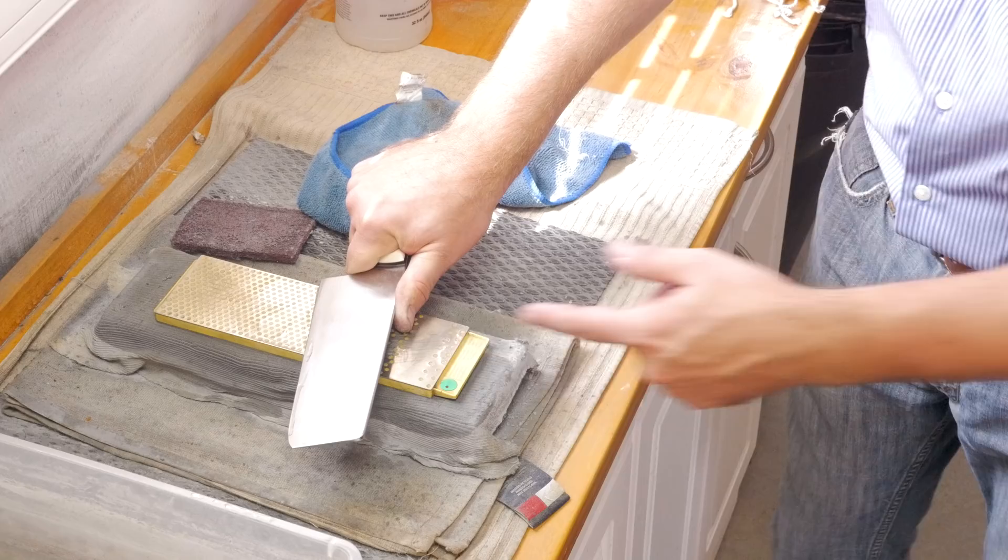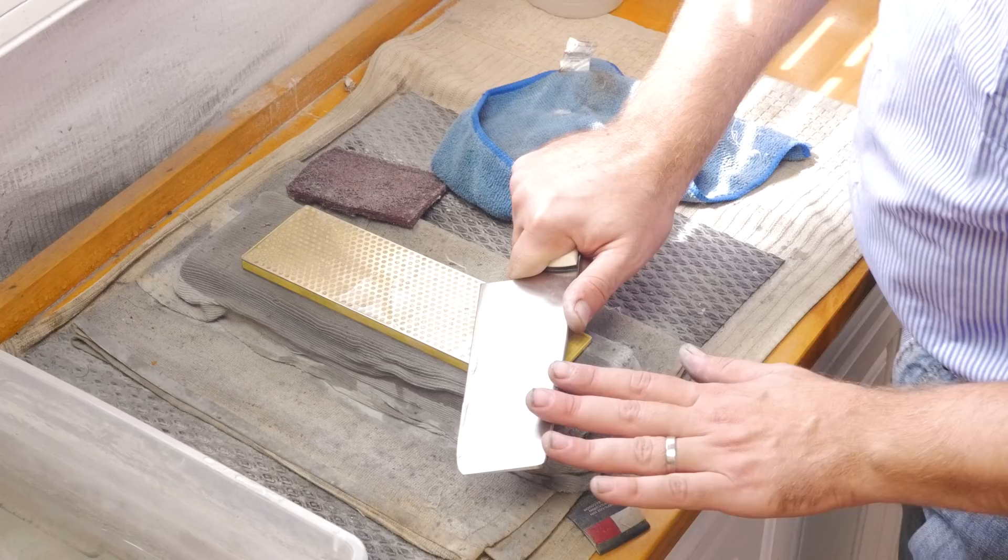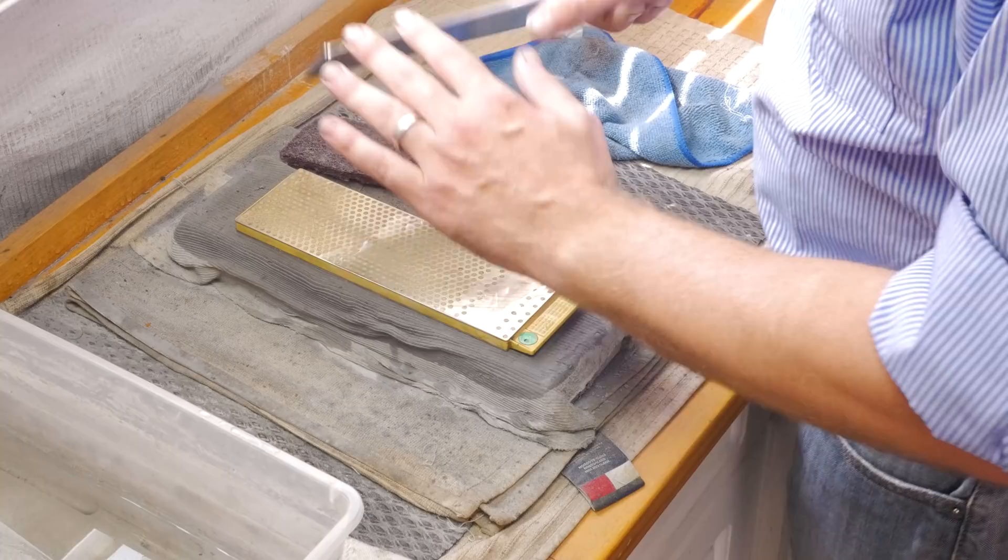So I do push on diamond because I actually think that diamond cuts better in a push cut and this isn't my final finish. The angle at which I sharpen, it's about my thumb, about three quarters of my thumb height. That gives us 15 to 16 degrees roughly. But really, it's just what feels comfortable and you adjust it based on how you use the knife.